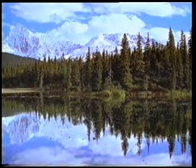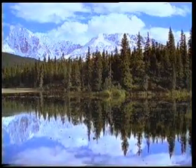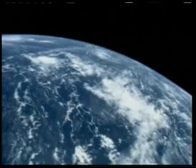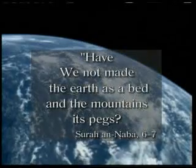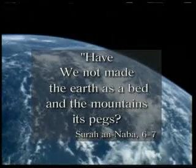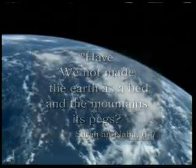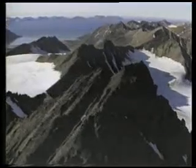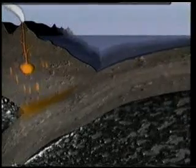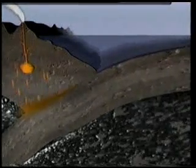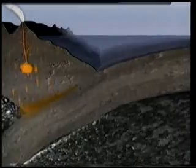In a verse, this role of the mountains is pointed out through a comparison with pegs. Mountains clench the plates in the earth's crust together by extending above and beneath the earth's surface at the conjunction points of these plates. In this way, they fix the earth's crust and prevent it from drifting over the magma stratum, or among its plates.